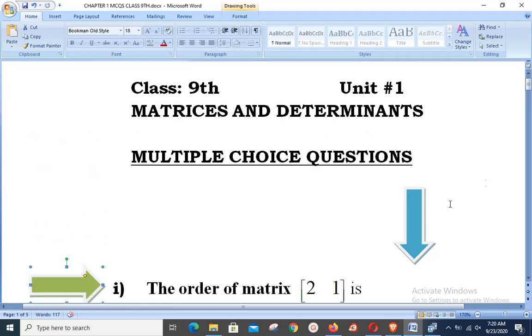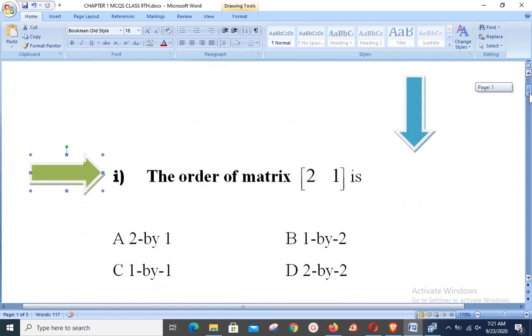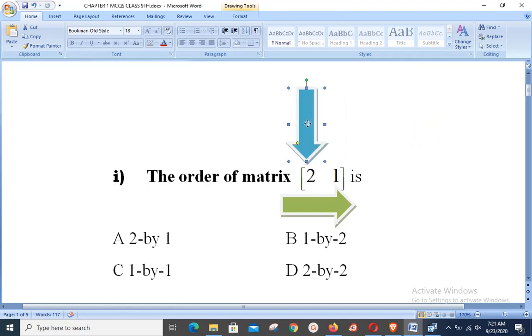Today's first objective statement says: the order of matrix [2 1] is... Students, the order of matrix you already know is number of rows multiplied by number of columns. Number of rows is in the horizontal arrow direction, whereas the vertical arrow indicates the first column which contains element 2, whereas the second column contains element 1.